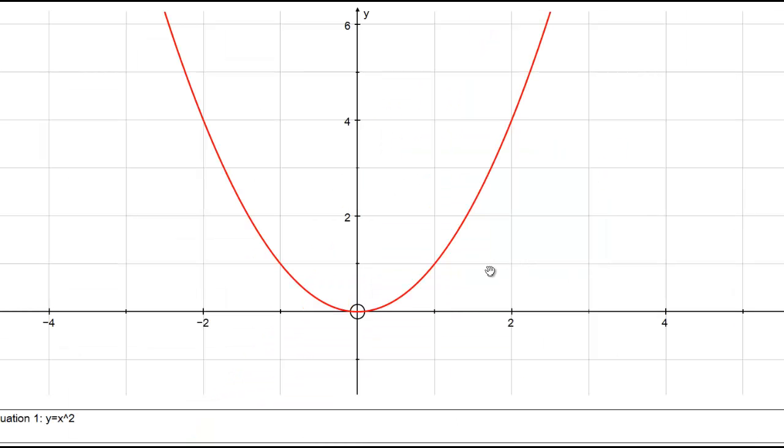But how can we define the gradient for a curve like this? We define the gradient of a curve as the gradient of the tangent to the curve at that point. And the tangent is a straight line which just touches the curve at that point.